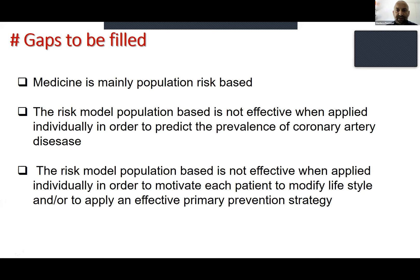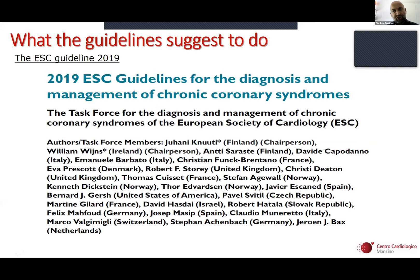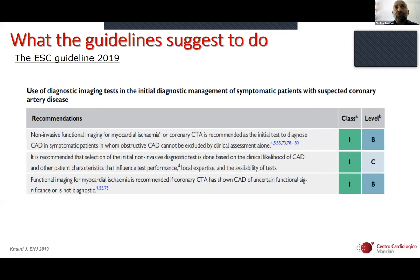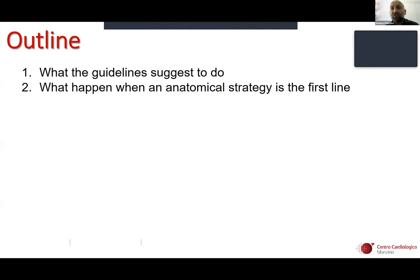The gap: medicine is mainly population risk-based, and population-based risk models are not effective when applied individually to predict disease in a specific patient. Moreover, communicating a generic risk of event is insufficient to motivate patients toward primary prevention. For this reason, in 2019 the approach was completely changed. Cardiac CT was introduced as a powerful tool to provide individual risk estimation for a specific patient in ischemic heart disease, now classified as Class 1, Level B evidence to rule out and rule in ischemic heart disease in patients with chest pain.